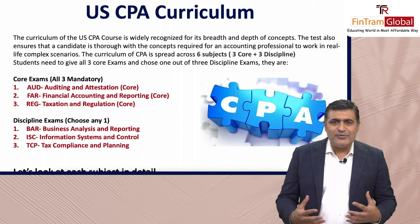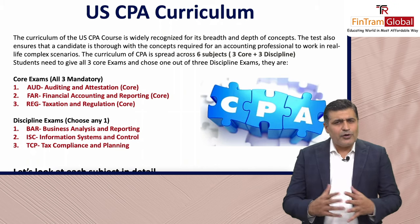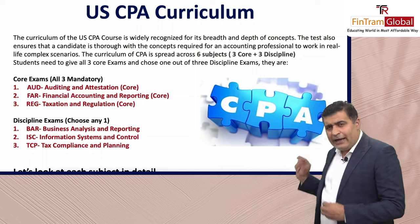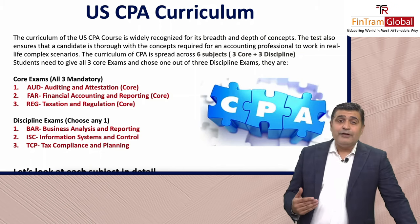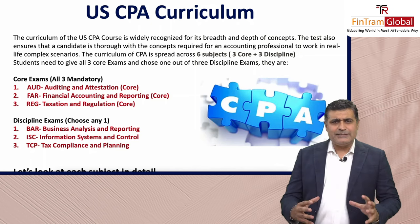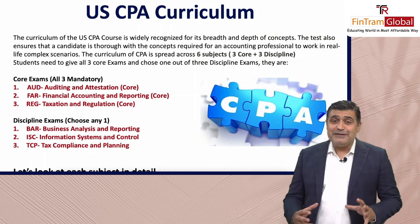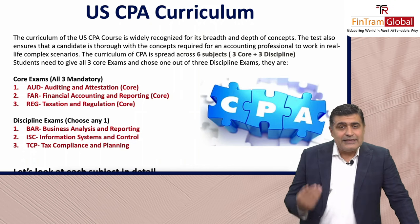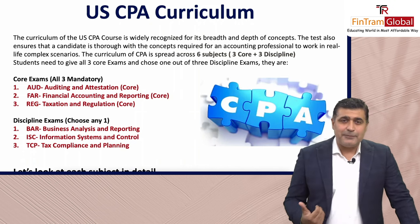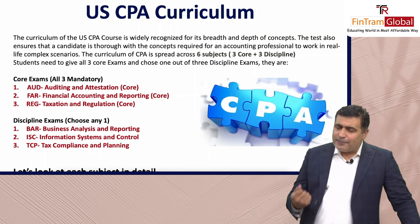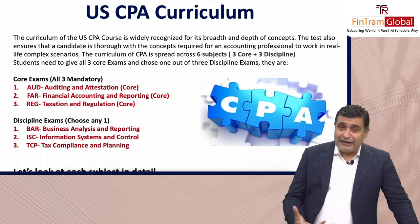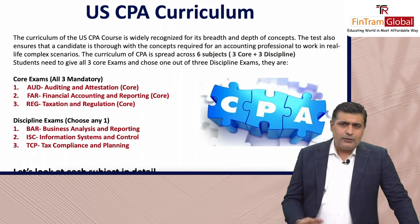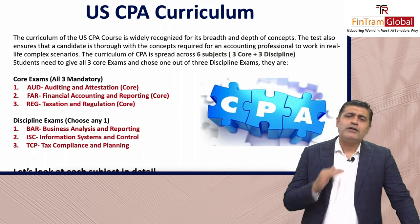BAR also has significant emphasis on governmental accounting and business analysis areas such as business studies and economics. ISE — Information Systems and Control — focuses on data management, the information systems side, data securitization, and security-related controls. TCP — Tax Compliance and Planning — covers individual and entity tax compliances and planning from the US standpoint, including how you manage and file returns. You choose one from these three, and that is what it is.